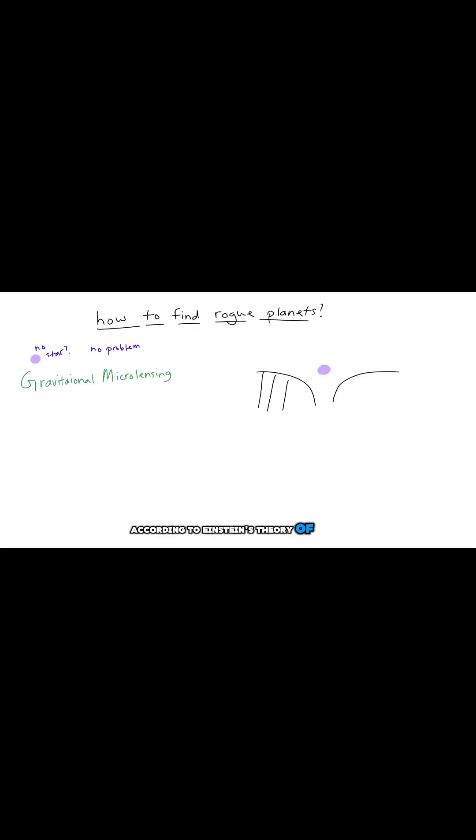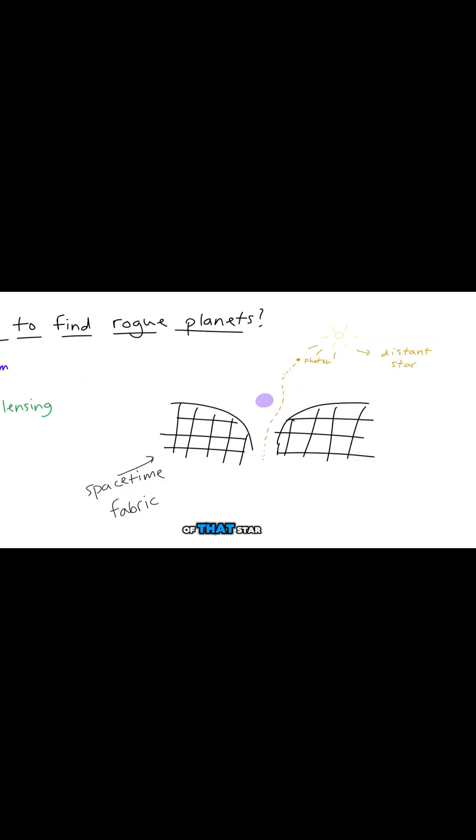According to Einstein's theory of general relativity, massive objects like planets bend the fabric of spacetime. When a rogue planet passes directly in front of a distant star from our perspective, its gravity acts like a lens, magnifying and distorting the light of that star.